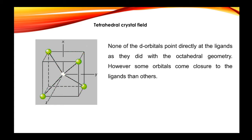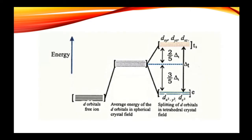The ligand orbitals cannot come into close contact with the metal d orbitals. That is why dxy, dyz, and dzx orbitals feel more repulsion from the ligands, while dx²-y² and dz² orbitals feel less repulsion. Where there is more repulsion there is an unstable state, so the energy is higher, while for dx²-y² and dz² there is less repulsion and so the energy is lowered.